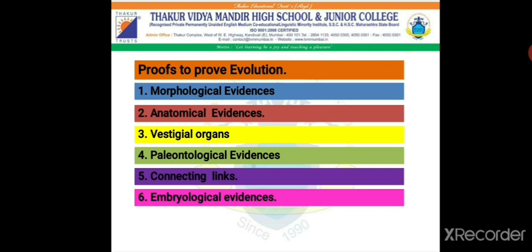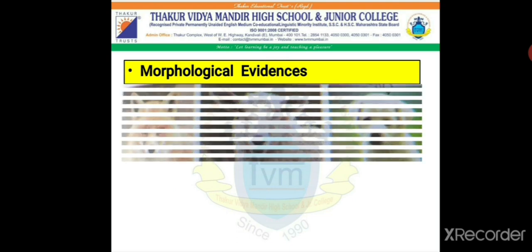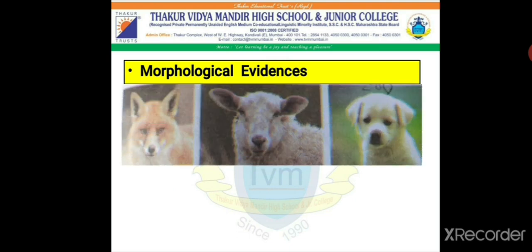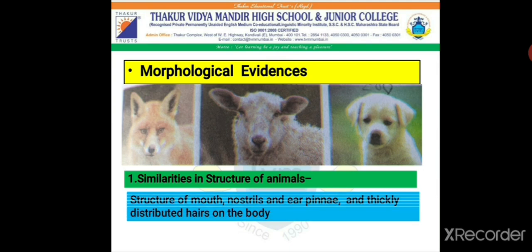Starting with the first one: morphological evidences. In this picture you will see three species of animals. The first one is a fox, the second one is a sheep, and the third one is a dog. If you observe them carefully you will find certain similarities in the structure of these animals — similarities in the structure of mouth, nostrils, ear pinna, and thickly distributed hairs on the body. These similarities indicate that they originated from a single species.